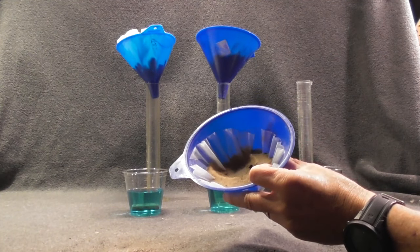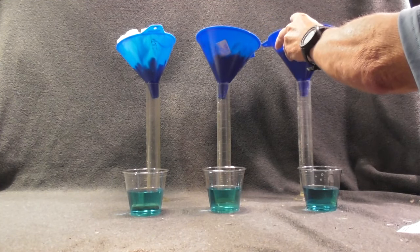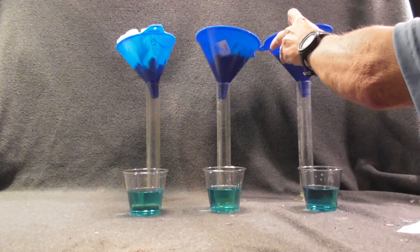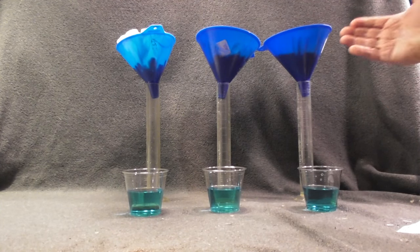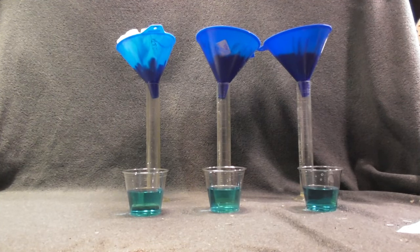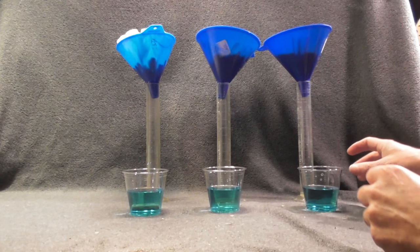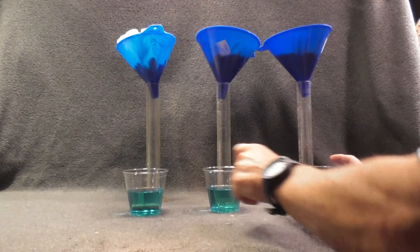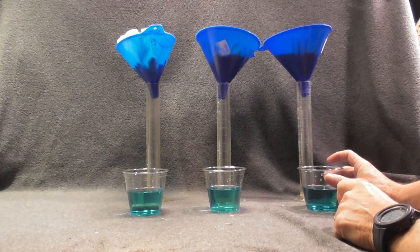We're going to pour roughly 100 milliliters of liquid into each and see how quickly the water passes through it. I'm going to start from the slowest and go to what I think will be the highest.